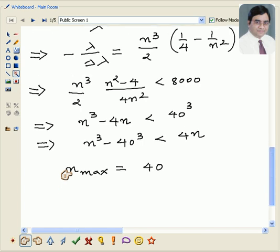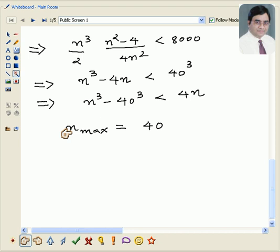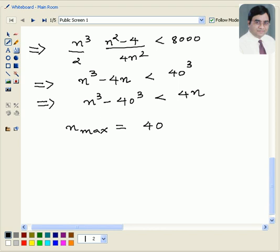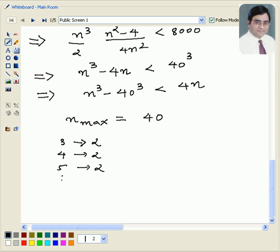As far as number of lines are concerned, then it is like this. We have 3 to 2. We have 4 to 2. We have 5 to 2. We have 6 to 2, and so on till 40 to 2. So how many lines do we get? 3 to 40. How many numbers are there from 3 to 40? And you find that there are 38 numbers. So the answer is 38.